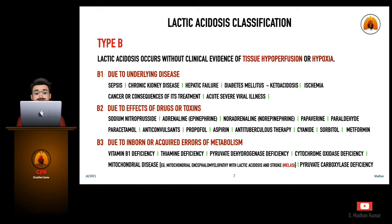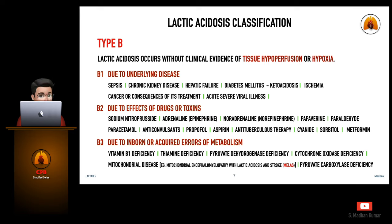Type B2 drugs and toxins also include paraldehyde, paracetamol, propofol, aspirin, cyanide, sorbitol, and metformin. Type B3 is due to inborn or acquired errors of metabolism, including vitamin B1 deficiency, thiamine deficiency, pyruvate dehydrogenase deficiency, cytochrome oxidase deficiency, mitochondrial diseases such as MELAS, and pyruvate carboxylase deficiency.